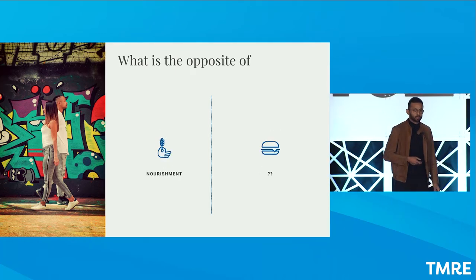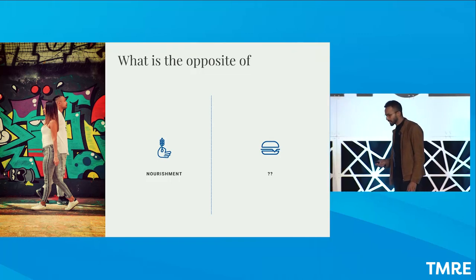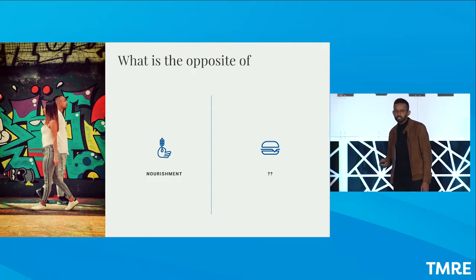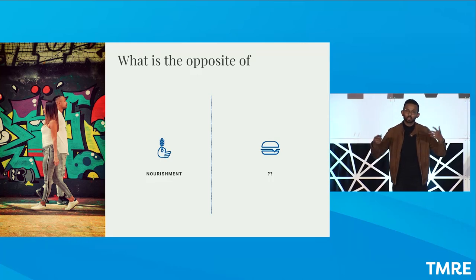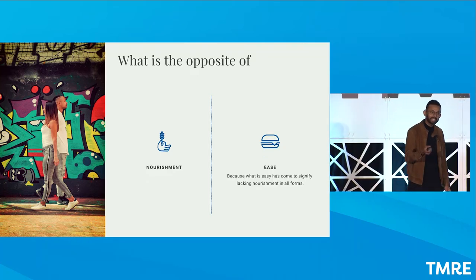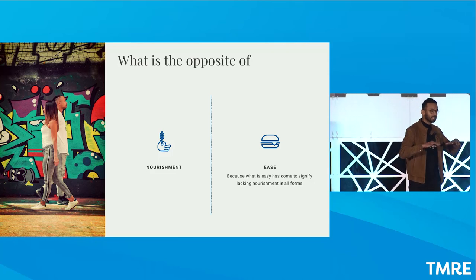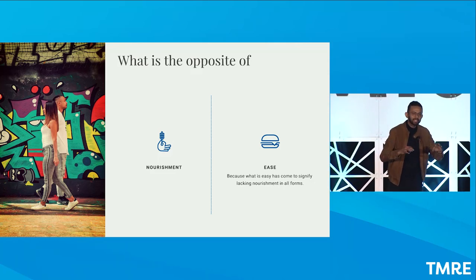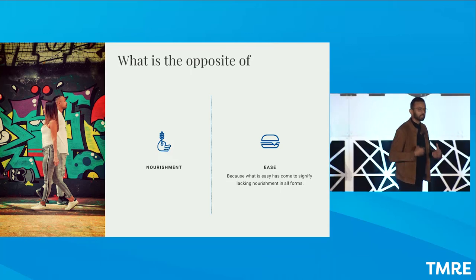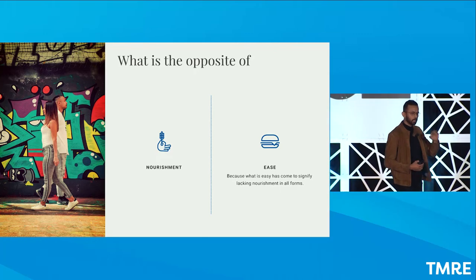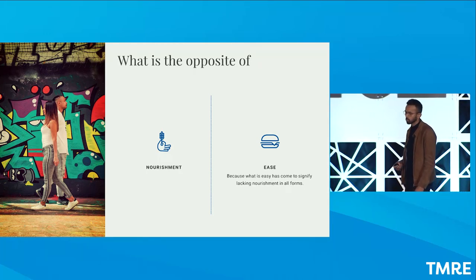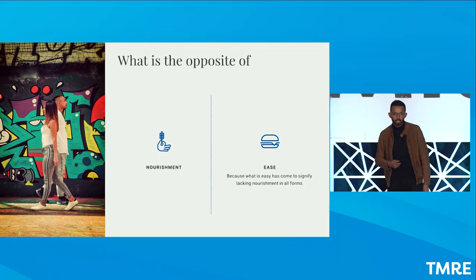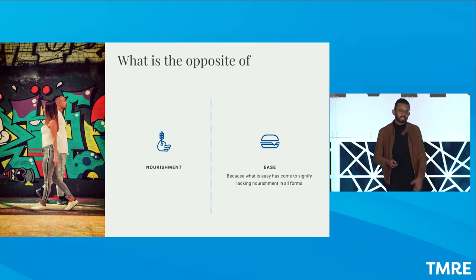Let's do the last one, nourishment. Again, the opposite of nourishment is also something that is a result of how our culture is transpiring. It's ease. Today, in culture, anything that's easy is assumed to lack nourishment, whether it's literally for the body in terms of nutrients, in nutrition, or figuratively in terms of nourishing our souls. The opposite of nourishment is ease.